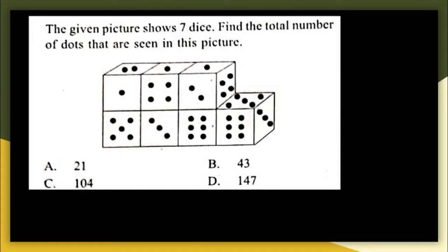The first question: the given picture shows seven dice. Find the total number of dots seen in this picture. You just have to count the number of dots — here you have two, one, five, three, four, one, one, two, six. Add up all these dots: six, three, five, and four.